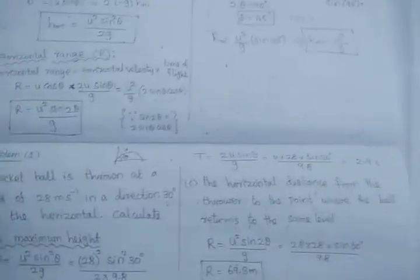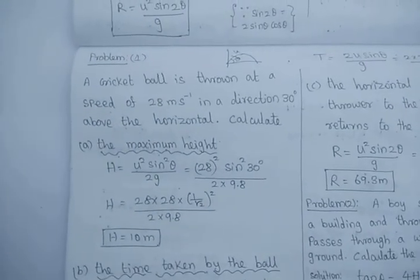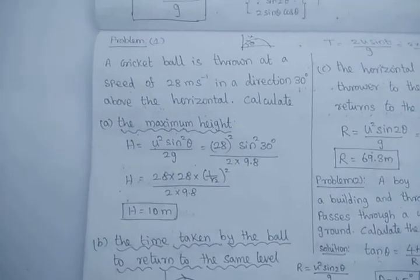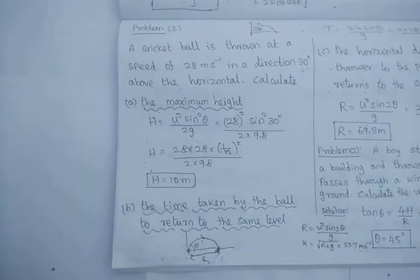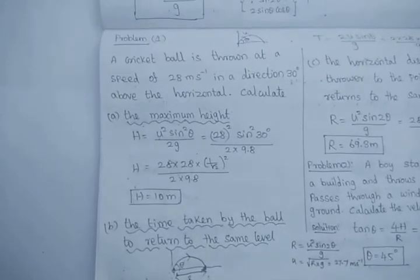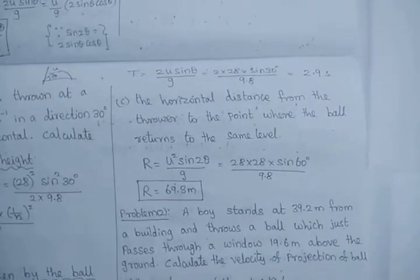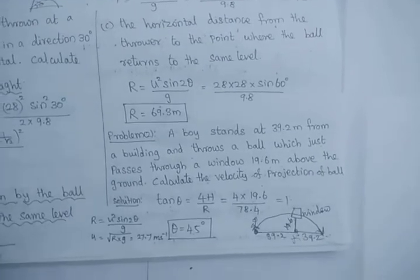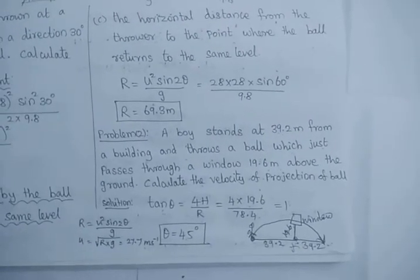I will show these problems very slowly for copying in your classwork. The first problem involves a cricket ball thrown at a certain velocity at 30 degrees, and the second problem calculates the initial velocity.